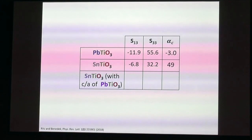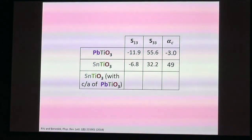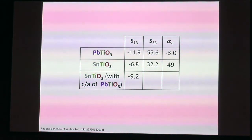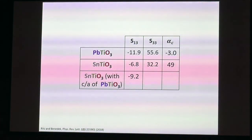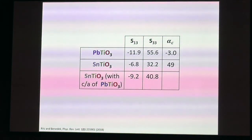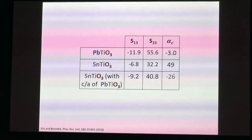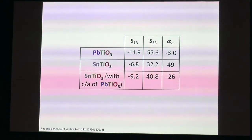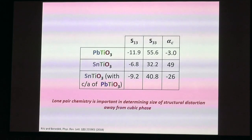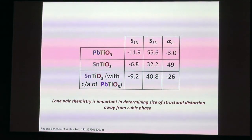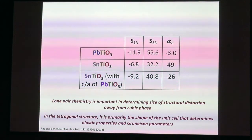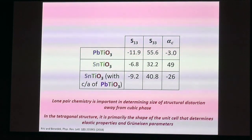We then made a 'Frankenstein material': tin titanate but constrained to the c/a ratio of lead titanate. In this hypothetical material, S₁₃ is more negative—more elastic coupling between A and C—and S₃₃ is larger, closer to lead titanate's value. Together with the Gruneisen parameters, α_C is negative and there is net negative thermal expansion. The conclusion is that lone pair chemistry is important for determining the size of the structural distortion away from the cubic phase, but once you're in the tetragonal phase it's mainly the shape of the unit cell that determines the elastic properties and Gruneisen parameters.